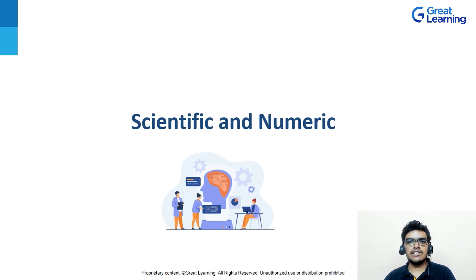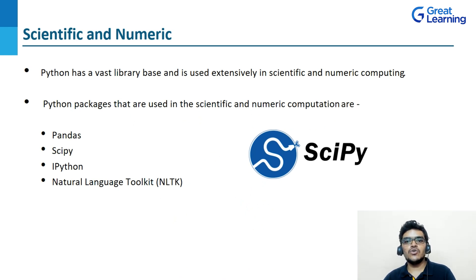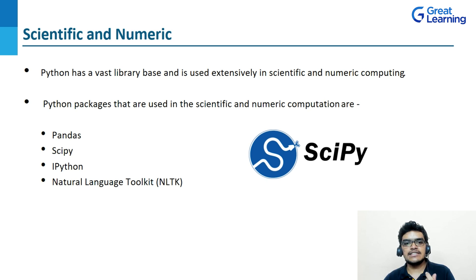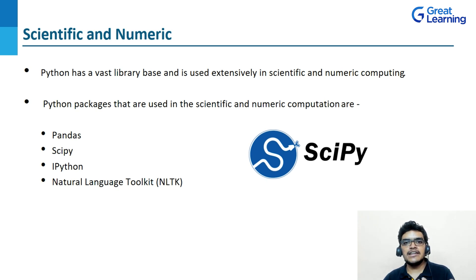Another application of Python is that it is used in scientific as well as numeric computing. Python is extensively used in scientific and numeric computing and has a huge library base. We are having several Python packages used in scientific and numeric computation: Pandas, SciPy, IPython, and NLTK. NLTK is used for natural language processing. Pandas is a very useful library used for data analysis.